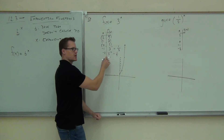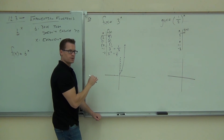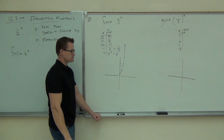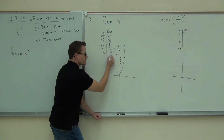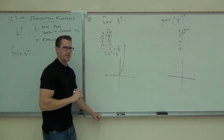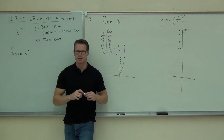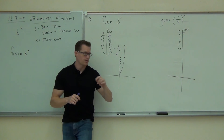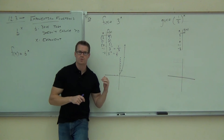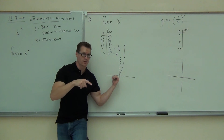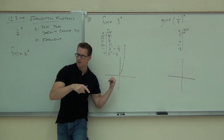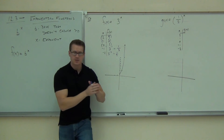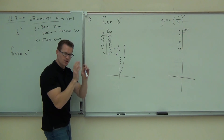On the other side, though, plot negative one comma one-third — that's just a little bit above the x-axis. Negative two gives us one-ninth, which is almost on the x-axis. Is this ever going to touch the x-axis? No. Three to the negative three is one over 27, three to the negative four is one over 81 — it keeps getting really, really close but never touches it. This is called being asymptotic to the x-axis. It has an asymptote — it's going to get really close, but never touch.